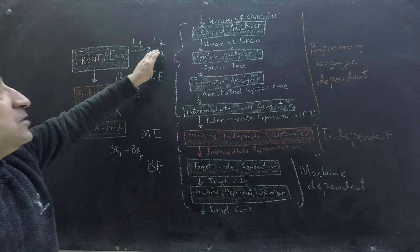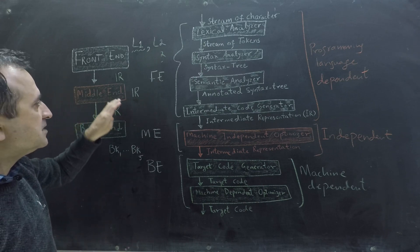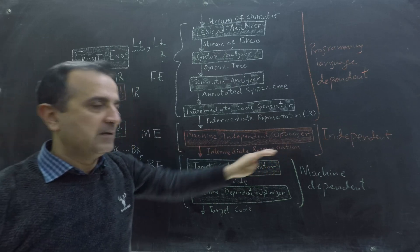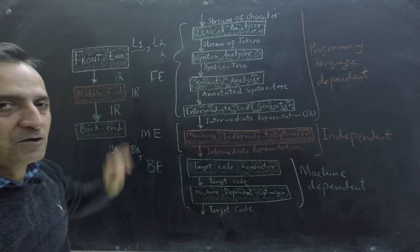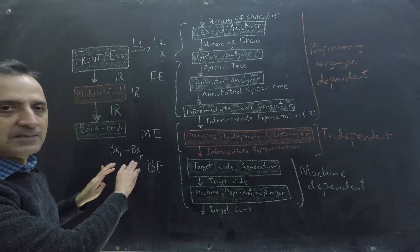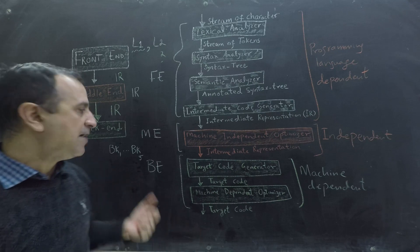So for L2, I only have to write the front end. I can use the existing code of machine independent optimizer because L1 already has the code written for it. I can use the existing code of all the backends and I can support my language in five different machines.